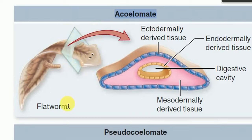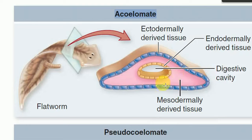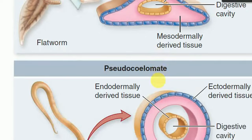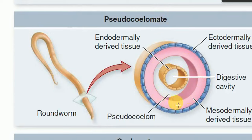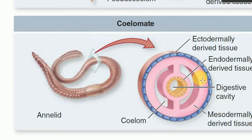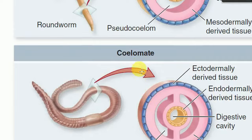In this picture you can see the cross-section of a flatworm. The blue color represents ectodermally derived tissue, and the yellow color is endodermally derived tissue. In between these layers you can find mesodermally derived tissue, but there is no body cavity between the mesodermally derived tissue and endodermally derived tissue — it is absent. In a pseudocoelomate, a space or body cavity is found between the endodermally and mesodermally derived tissue, but in flatworms it is absent.